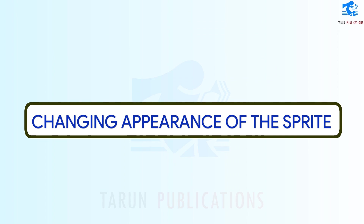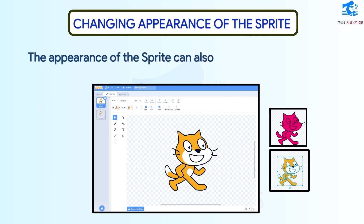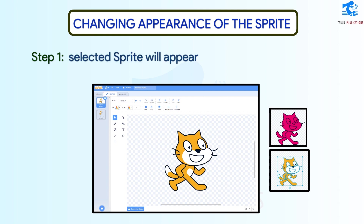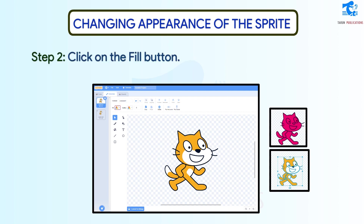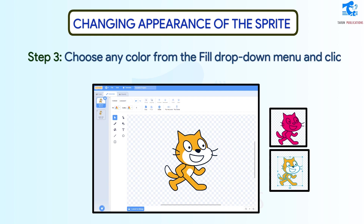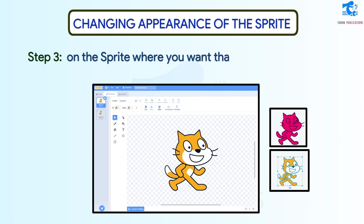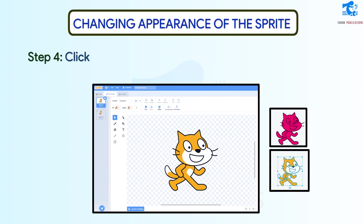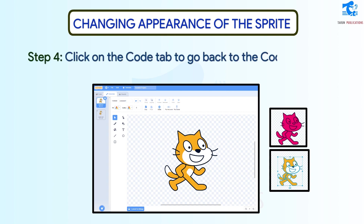Changing the Appearance of the Sprite. The appearance of the Sprite can also be changed. Follow these steps. Step 1: Click on the Costumes tab. An image of the selected Sprite will appear in the tab. Step 2: Click on the Fill button. Step 3: Choose any color from the Fill drop-down menu and click on the Sprite where you want that color. You can add different colors to different areas of the Sprite. Step 4: Click on the Code tab to go back to the Coding Area.